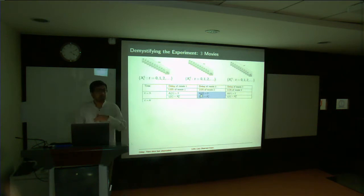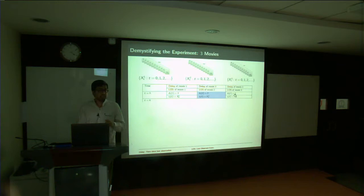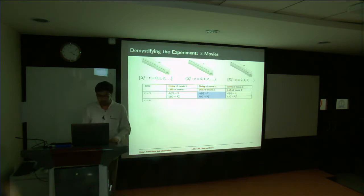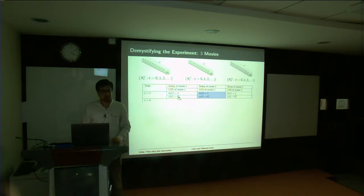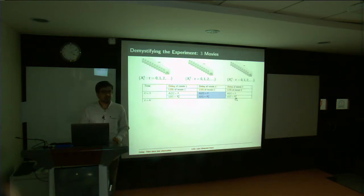Movie 2 you observed 2 time instants back at time t equal to 1; movie 3 you observed 1 time instant back — the previous time instant — and whatever you had collected was the last observed state of that movie at time 0 for movie 1, time 1 for movie 2, and time 2 for movie 3.